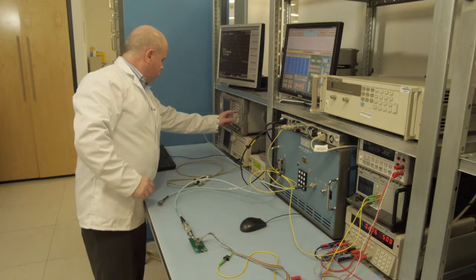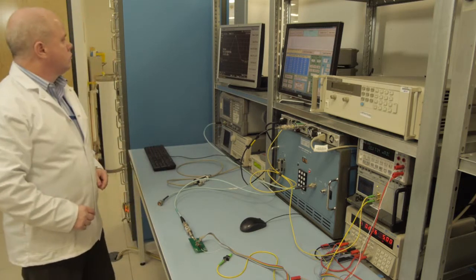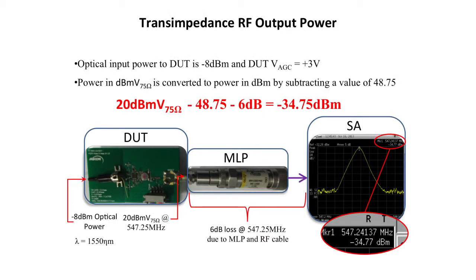RF power measured in dBmV in 75 ohms can be converted to power in dBm by subtracting the constant of 48.75. The loss between the DUT output and spectrum analyzer is approximately 6 dB and is due to MLP and RF cable loss.